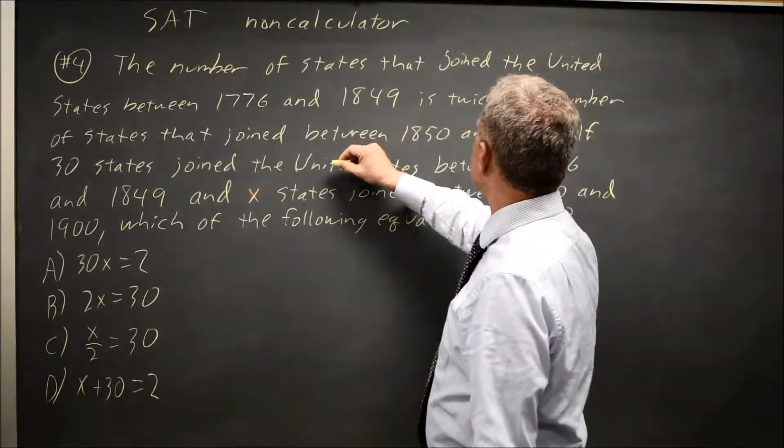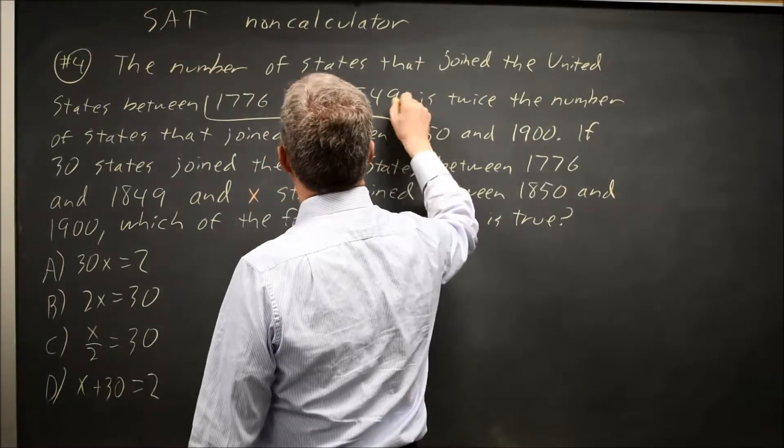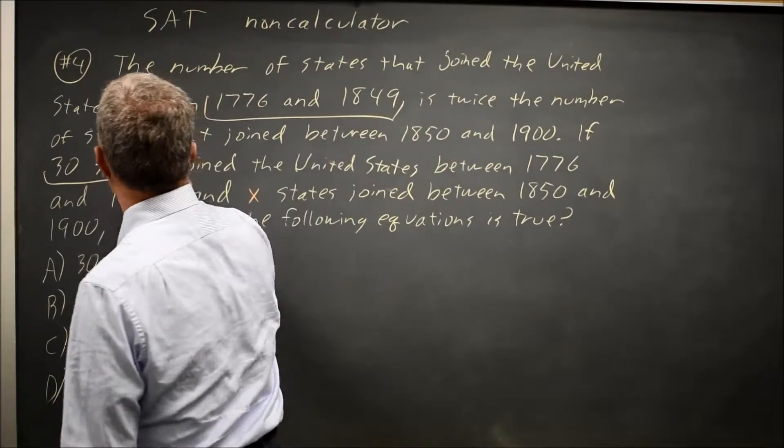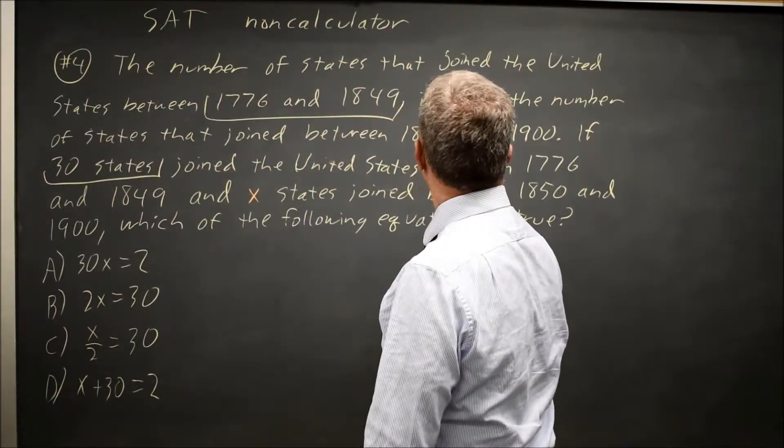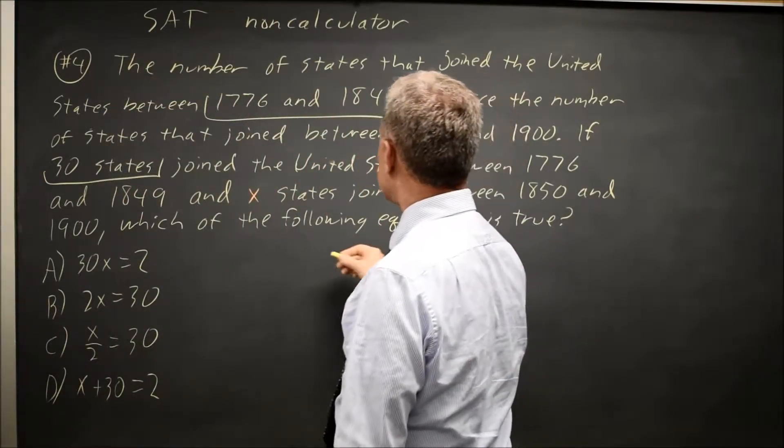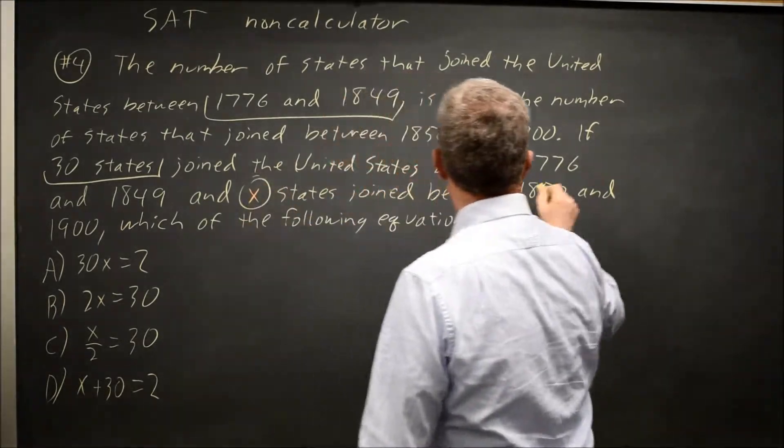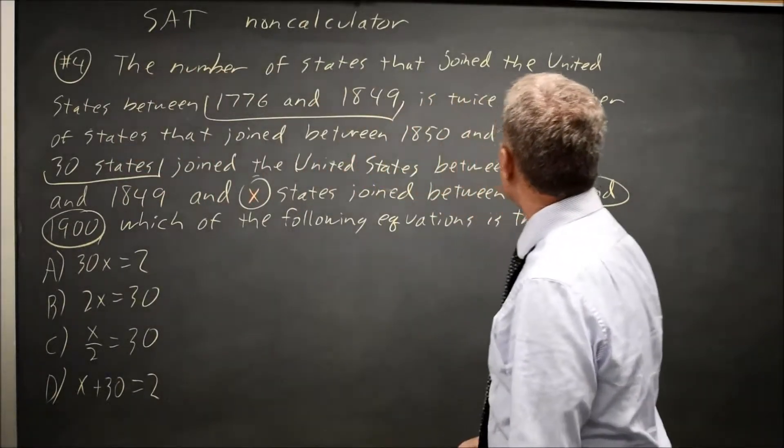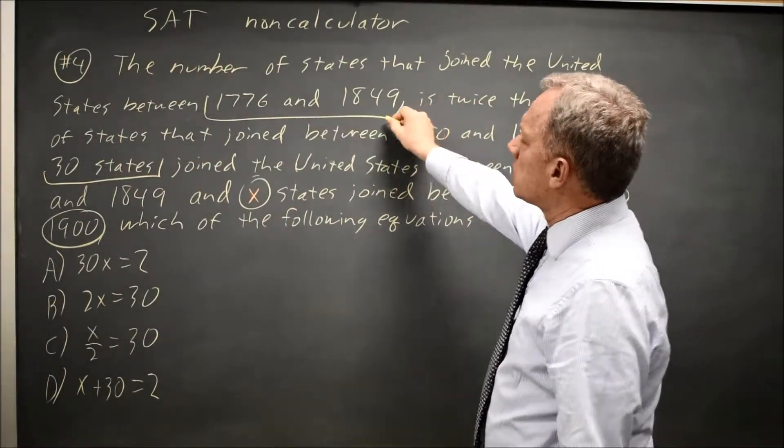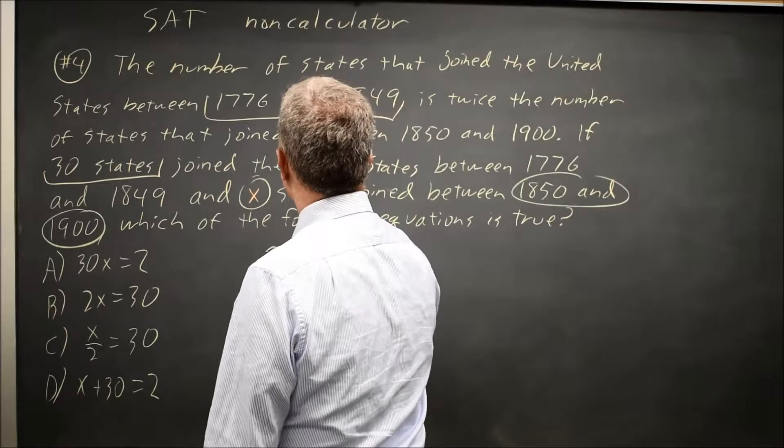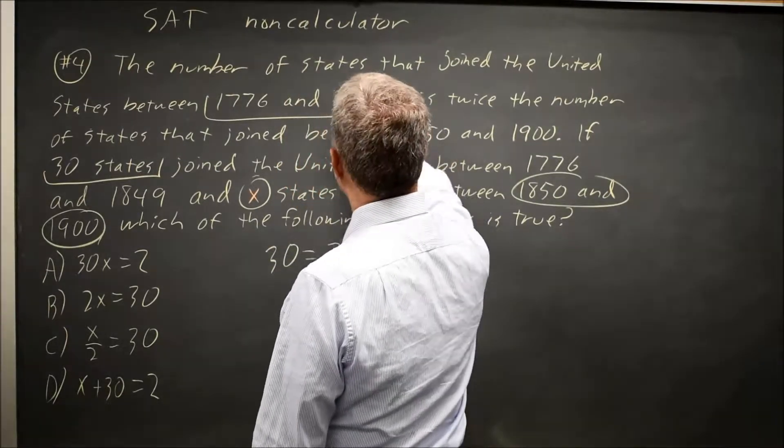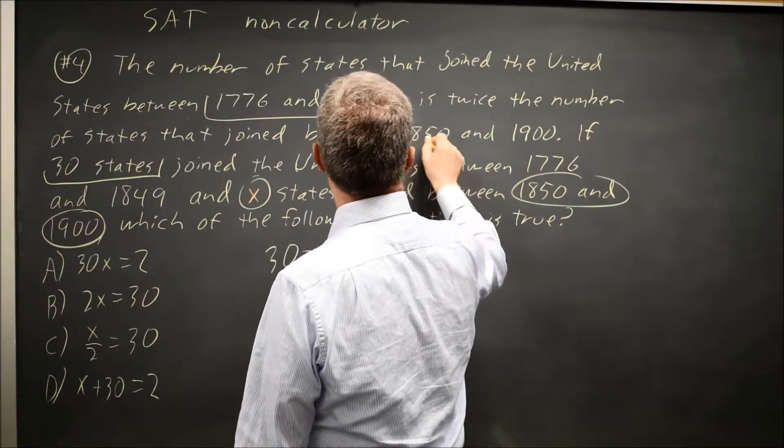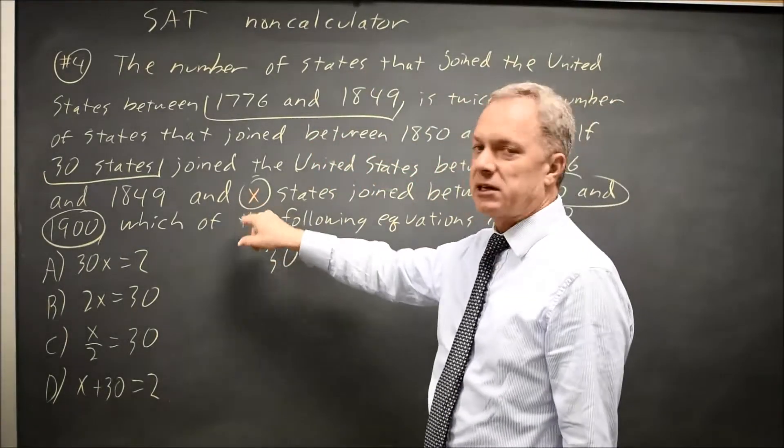They say 30 states joined between 1776 and 1849, and X states joined between 1850 and 1900. And they say the 30 that joined early is twice the number X that joined 1850 to 1900, which they say here is X.